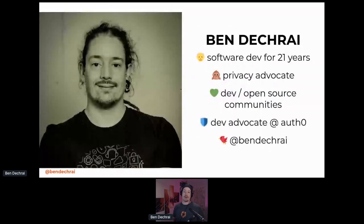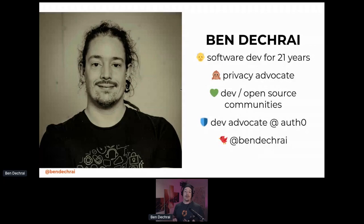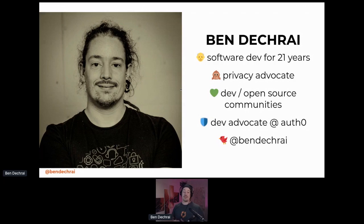My name is Ben Dekrai. I've been a software developer for 21 years now — this number keeps going up and I'm starting to feel quite old in this industry. For the largest part of that, I've been a privacy advocate, big on giving users control over the data they share. I've been involved in the dev and open source community for almost all of that time, and those interests culminated in me becoming the developer advocate for Auth0 in the APAC region. My social media handle is my name, Ben Dekrai — feel free to reach out on Twitter, my DMs are open.